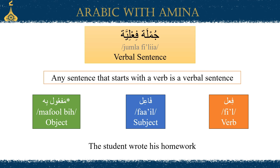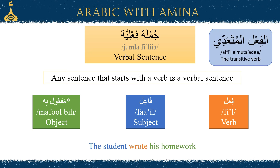For example: 'The student wrote his homework.' The fi'l is 'wrote,' the subject would be 'the student,' and the object would be 'his homework.' A verb that requires all three components — the verb, subject, and object, or fi'l, fa'l, and maf'ool bi — is known as a transitive verb or al-fi'l al-muta'addi.